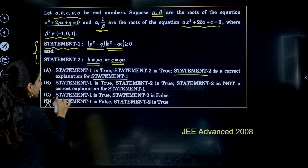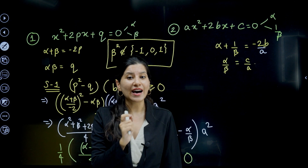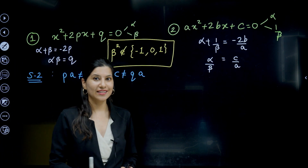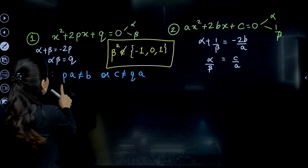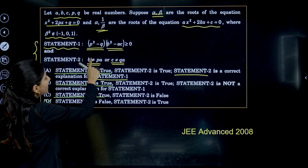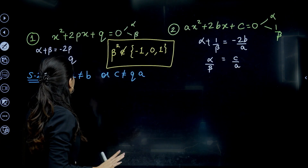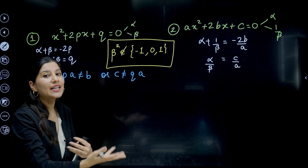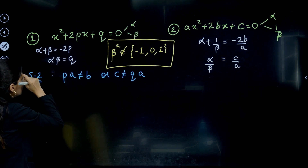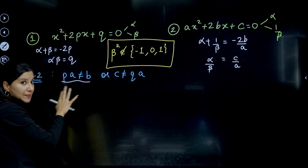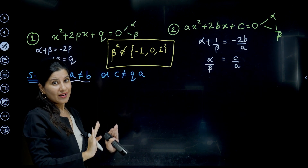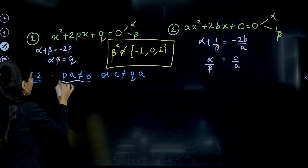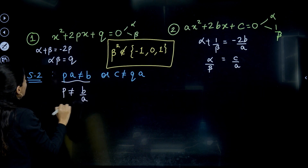So option D is wrong; Statement 1 is true. Now we need to check the validity of Statement 2: B ≠ PA and C ≠ QA. Statement 2 means either PA ≠ B or QA ≠ C. Let us convert P and B/A in terms of alpha and beta, just as we did for Statement 1.